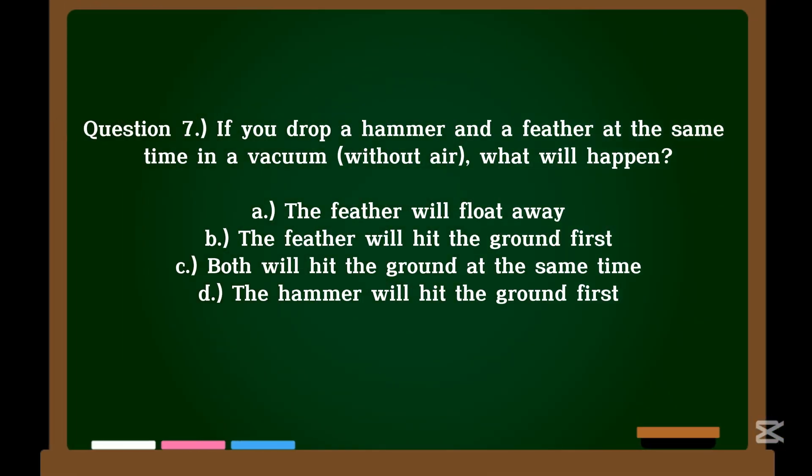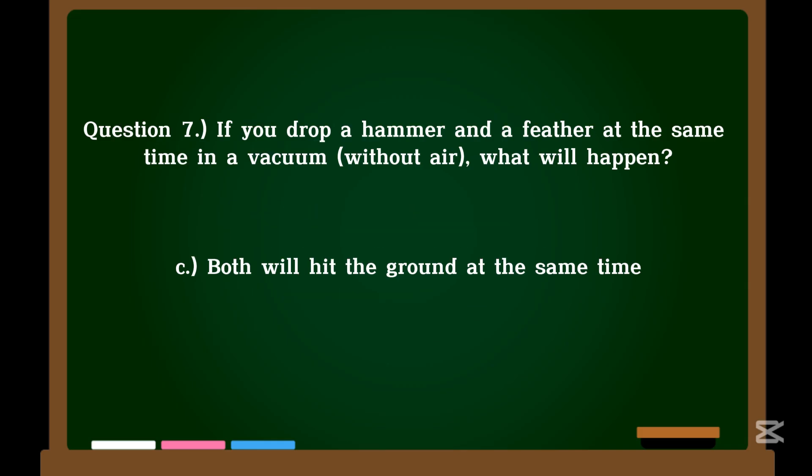Question 7. If you drop a hammer and a feather at the same time in a vacuum without air, what will happen? A. The feather will float away. B. The feather will hit the ground first. C. Both will hit the ground at the same time. D. The hammer will hit the ground first. Correct answer: C. Both will hit the ground at the same time.